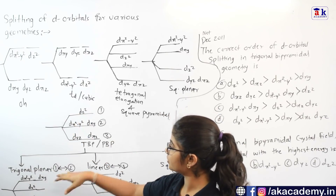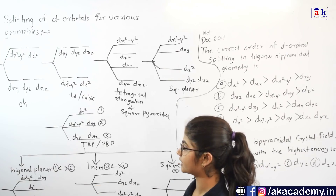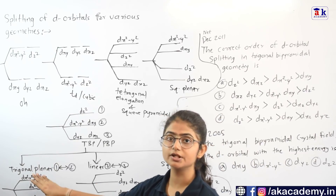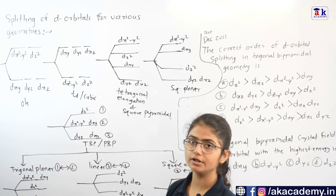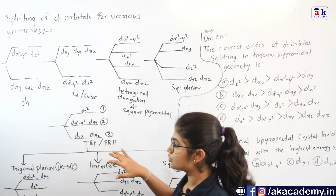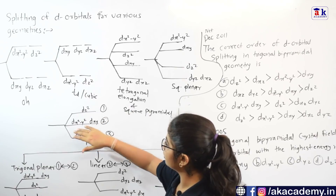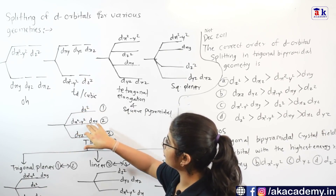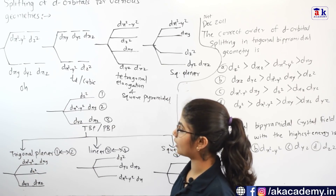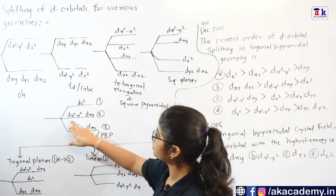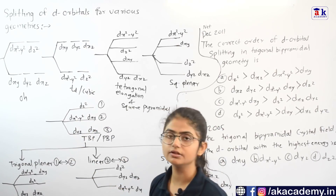From the TBP diagram we can derive the splitting for other geometries. For trigonal planar geometry, start with the TBP splitting and swap positions one and two — that is, DX square minus Y square and DXY go up while DZ square comes down, and the third level remains as it is.